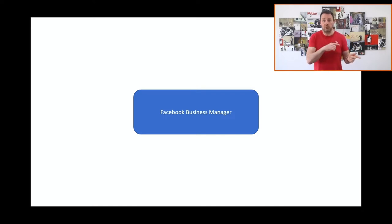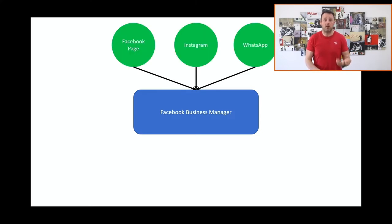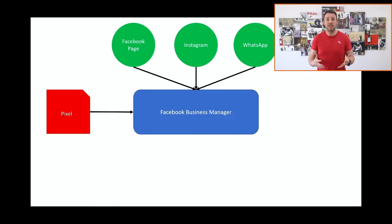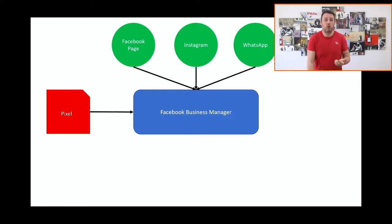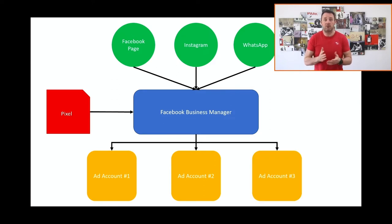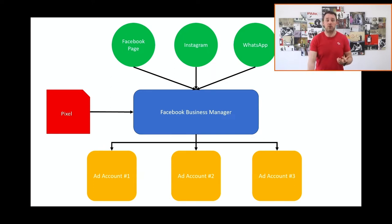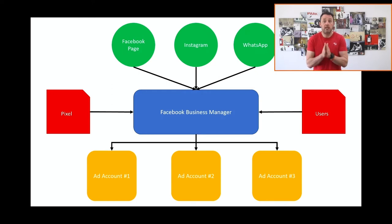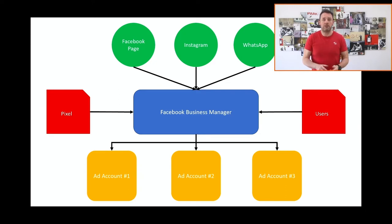Once we have the container set up, we can then start adding our assets into Business Manager. We'll begin with our Facebook page, Instagram, and WhatsApp. We can then add the Facebook Pixel, which lets you build custom audiences and tracks the actions that people take on your website, and you can share this data with your ad accounts. If you're only getting started with Facebook ads, you'll likely only need one ad account. However, if you have different businesses or significantly different offers, you can create up to 25 Facebook ad accounts. Finally, you can add users to your Business Manager, which allows you to share different levels of access to your meta business assets in a highly secure, visible, and controlled way.